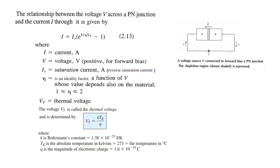The thermal voltage VT is defined by another formula: VT = kT/q. Here k is Boltzmann's constant, whose value is 1.38 × 10⁻²³. TK is the absolute temperature in Kelvin, which is 273 plus the temperature in degrees Celsius. And q is the magnitude of the electron charge, which is 1.6 × 10⁻¹⁹ coulombs. The only thing you need to know is the absolute temperature TK to calculate VT.